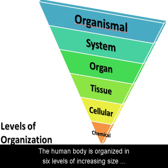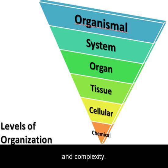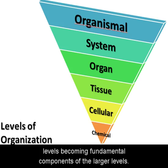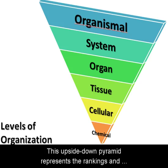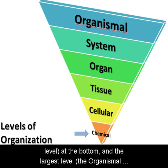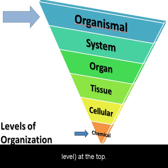The human body is organized in six levels of increasing size and complexity. These levels are ranked in a hierarchy, with the smallest levels becoming fundamental components of the larger levels. This upside-down pyramid represents the rankings and size of the levels, with the smallest level, the chemical level, at the bottom, and the largest level, the organismal level, at the top.